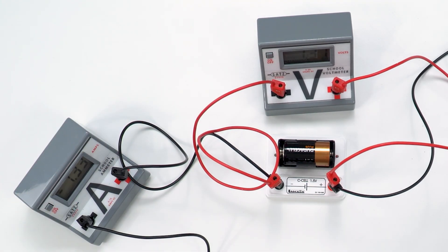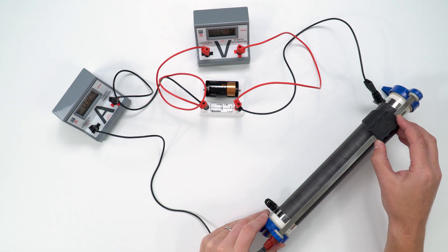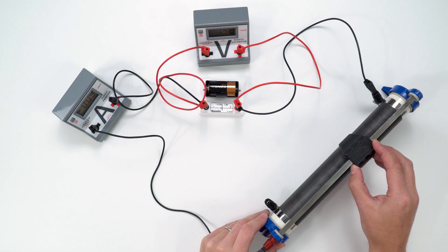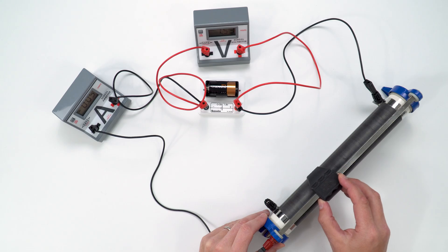And when we move this the other way we can see how the terminal PD increases when we have a lower value of current.